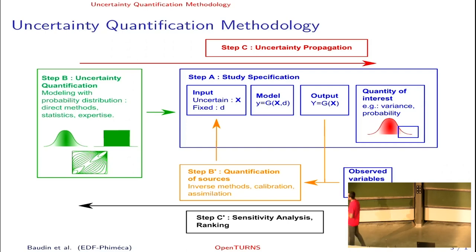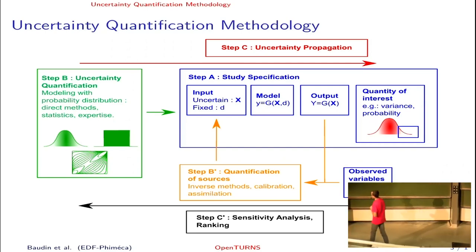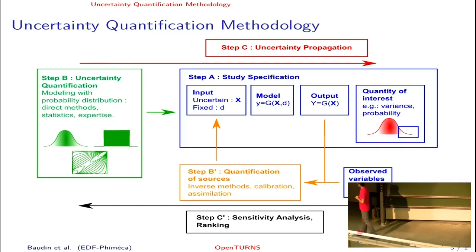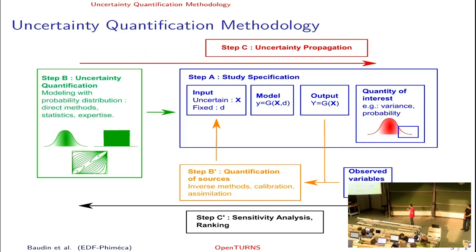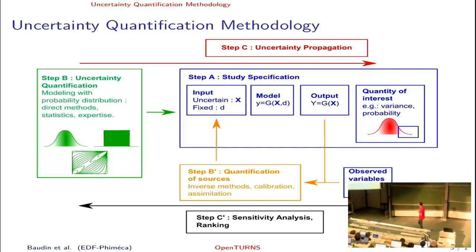This is Step A. Then we go to Step B, which is the uncertainty quantification step, which consists of defining the distribution of the input variable. There are various ways to do this. The next step is Step C, the uncertainty propagation step. There are various methods to do this. The most famous one is Monte Carlo algorithm, but there are more efficient algorithms in some situations. Step C prime is a sensitivity analysis step which consists in ranking the input variables with respect to their contribution to the variability of the output.